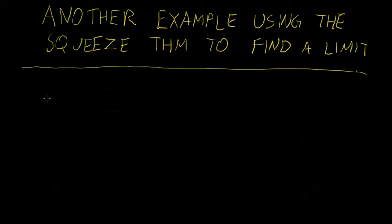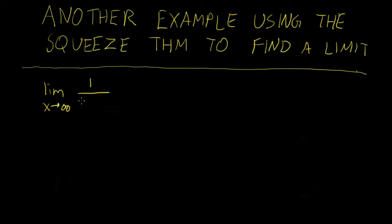In this video we're going to be taking a look at another example in which we're going to be using the squeeze theorem to find a limit. The limit we're going to be finding is the limit as x tends to positive infinity of 1 over 2x plus e to the minus x.